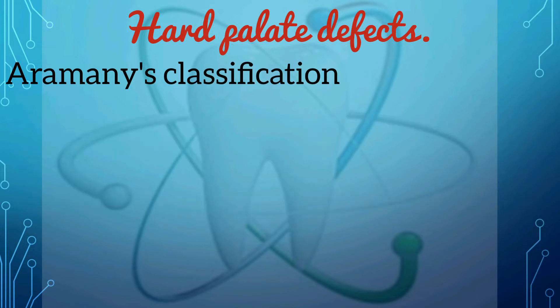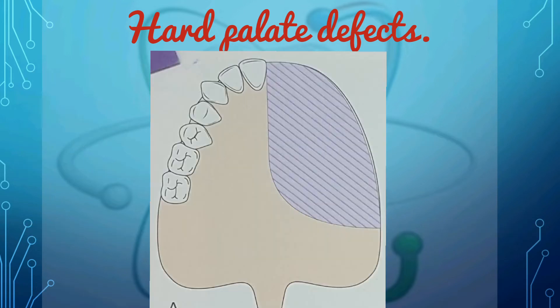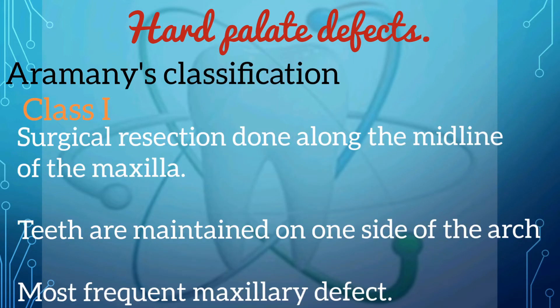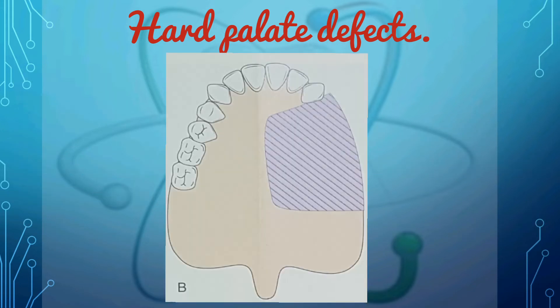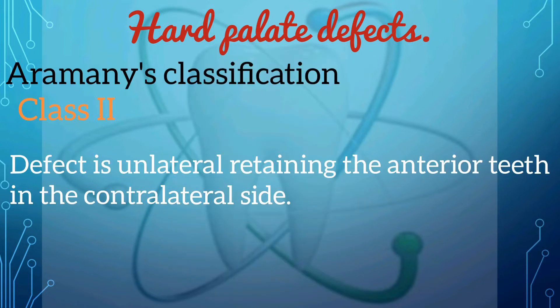In Class 1, the surgical resection is performed along the midline of the maxilla and teeth are maintained on one side of the arch. This is the most frequent maxillary defect and most patients fall into this category. In Class 2, the defect is unilateral, retaining the anterior teeth on the contralateral side.